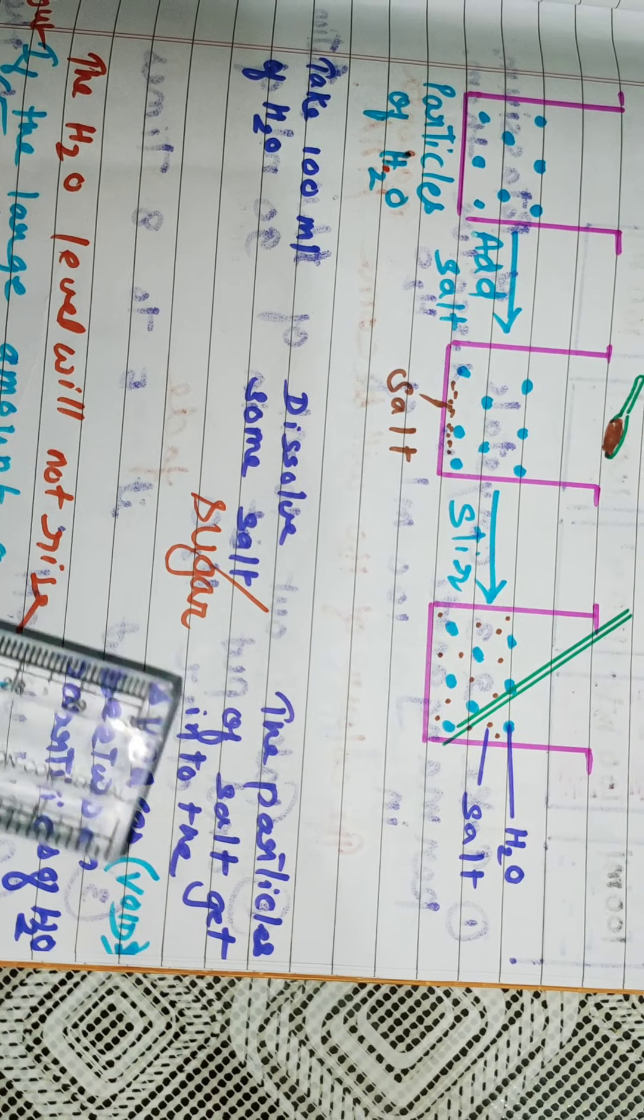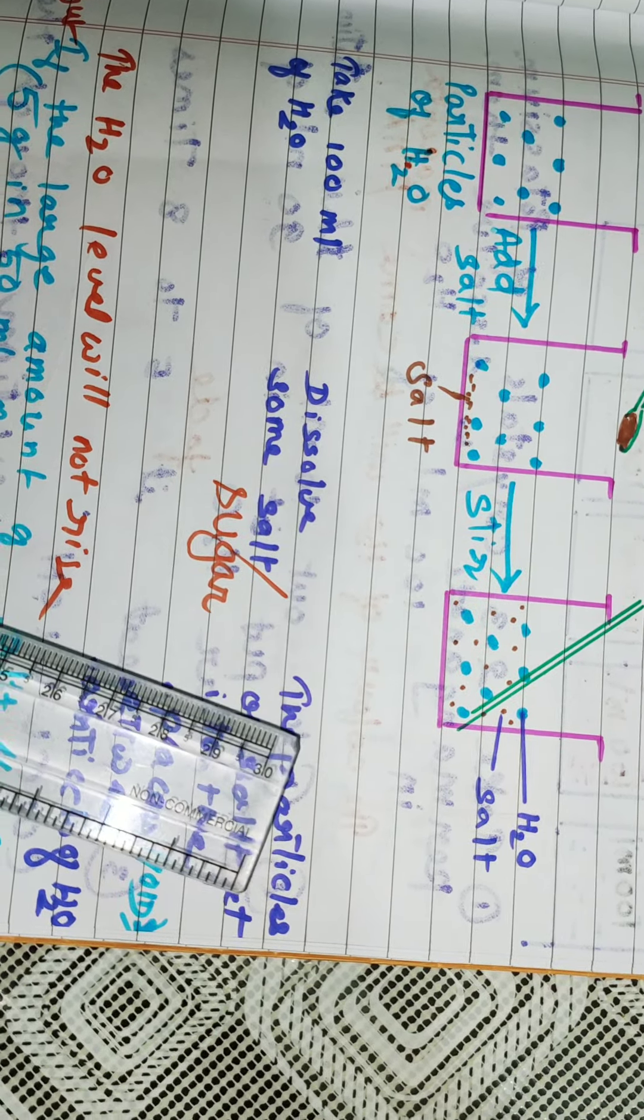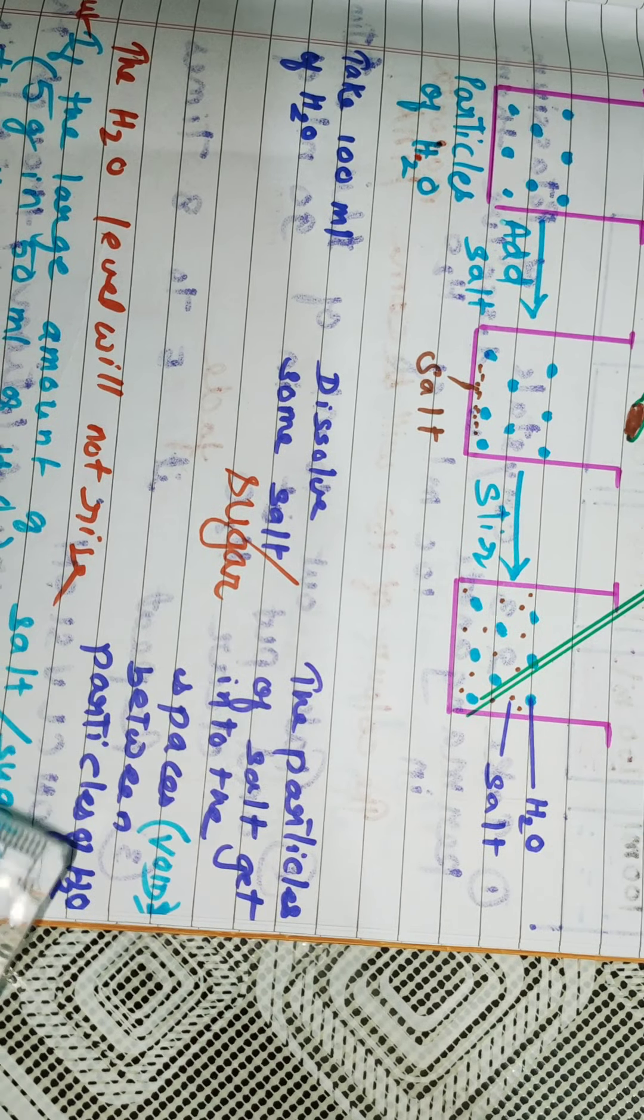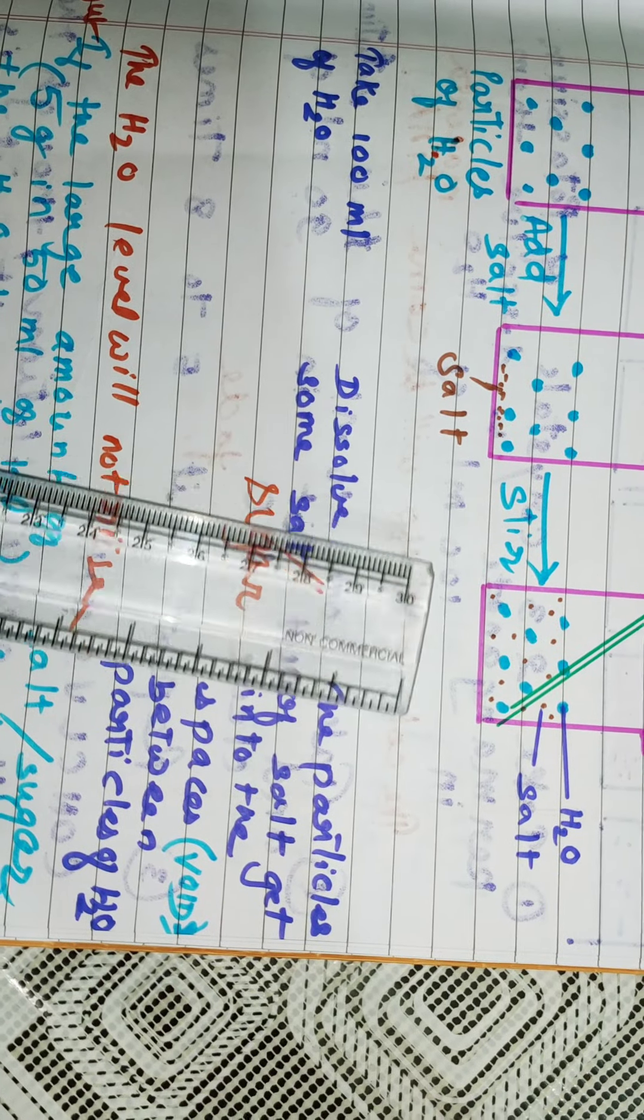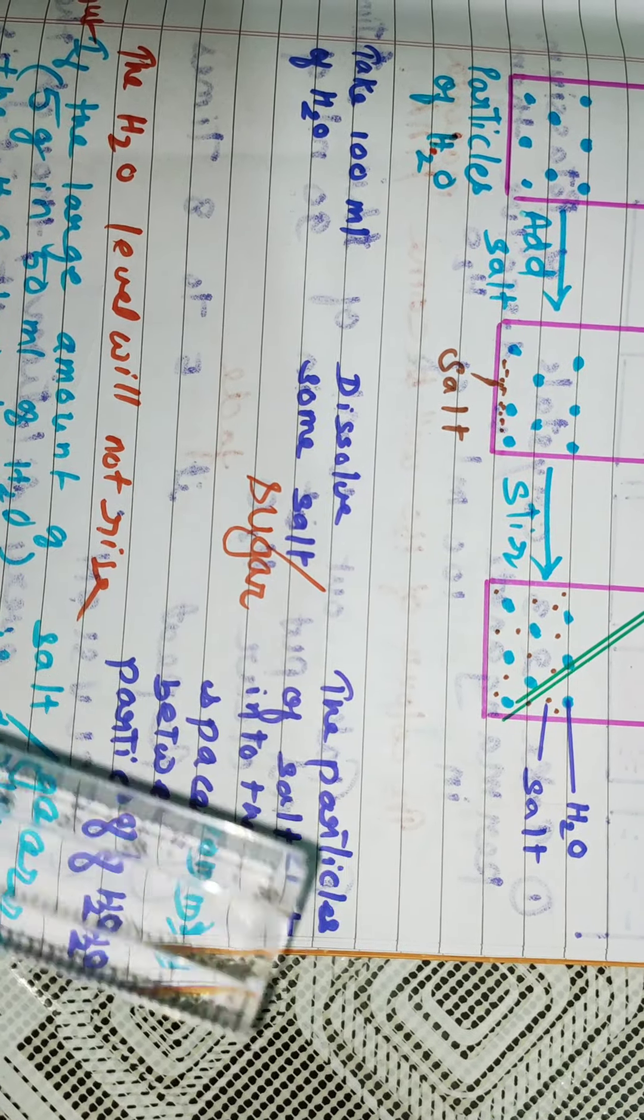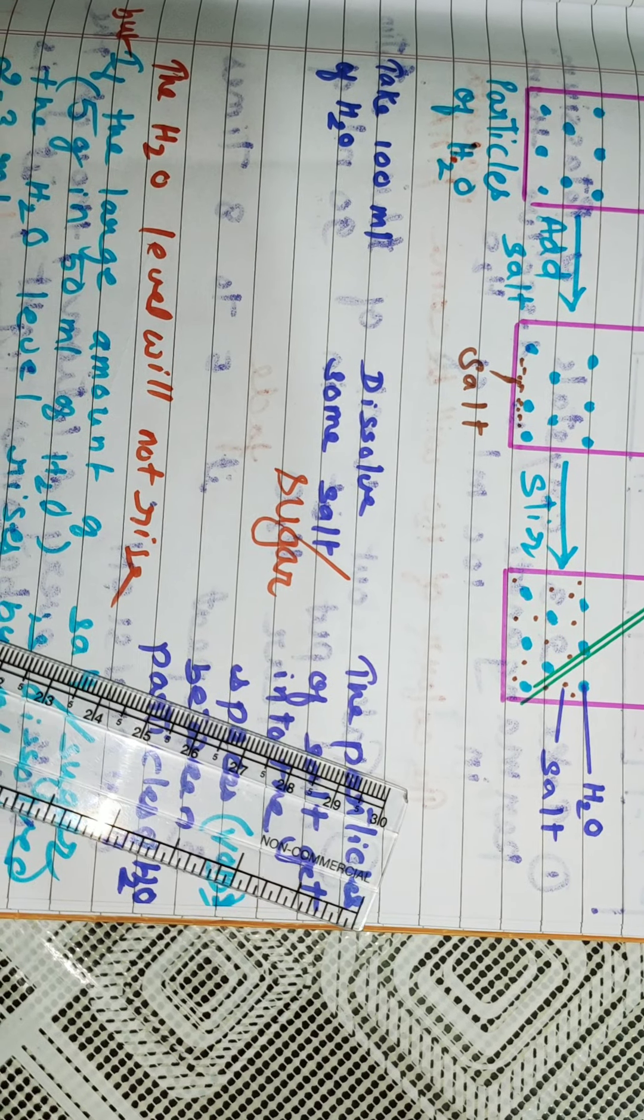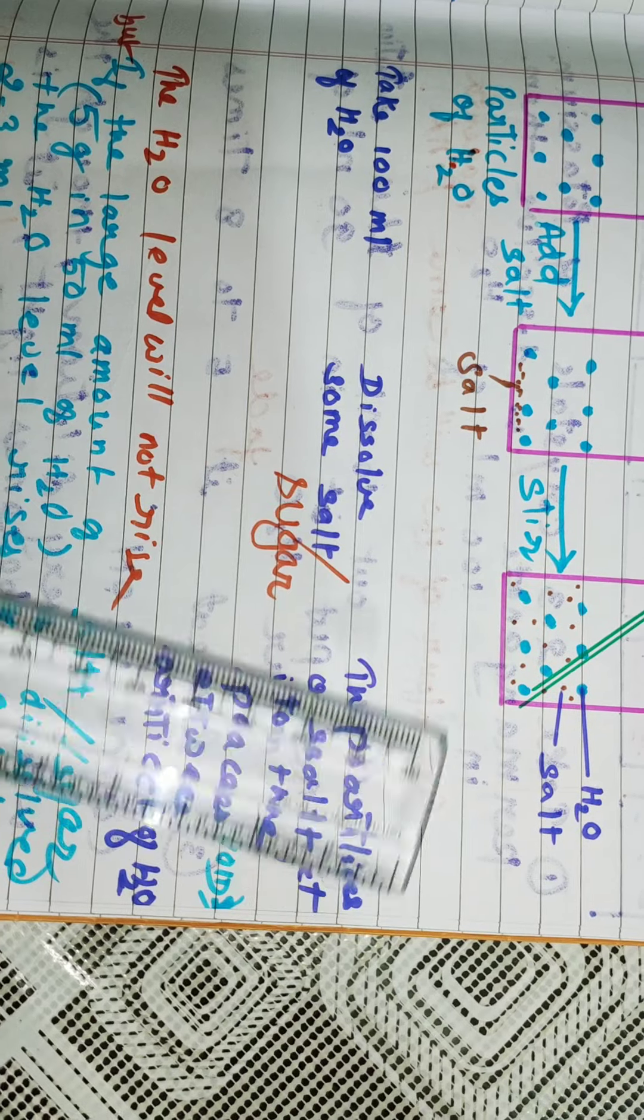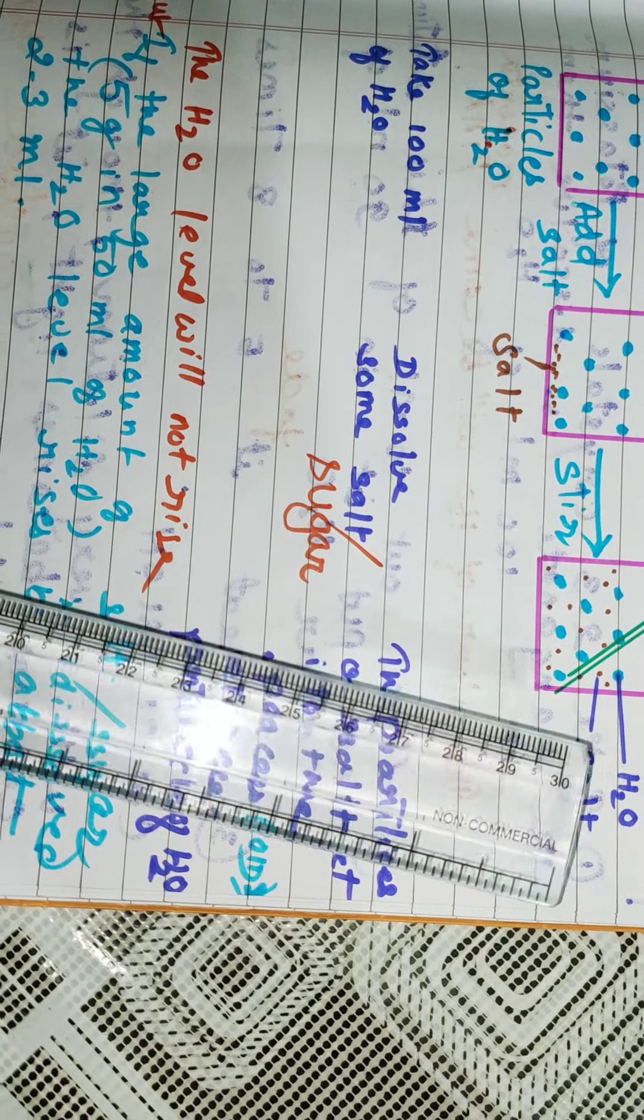The question arises, why there is not rise in the level of water? That's because water particles have space in between them. This space is also known as voids. The salt particles get into the space between the water particles. Therefore, there will not be rise in the level of water.